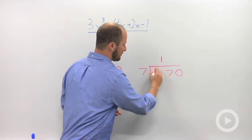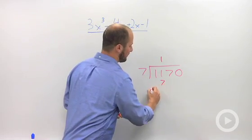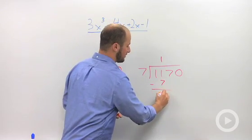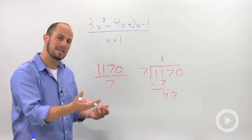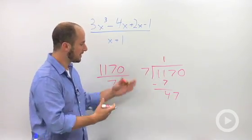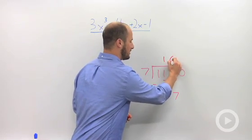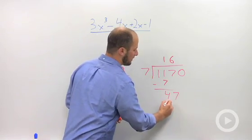Draw the 1. 1 times 7 is 7, and then we subtract, dropping down the next term, 47. Continue from there. How many times does 7 go into 47? This is 6. 6 times 7 is 42.